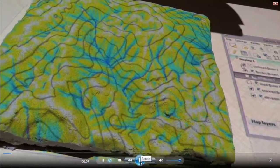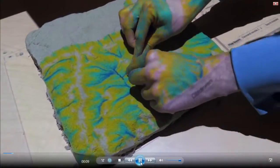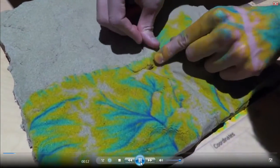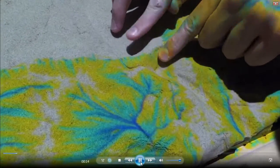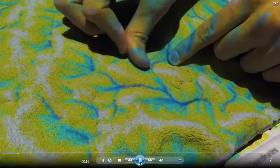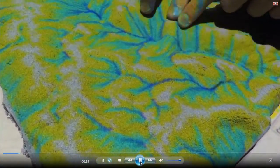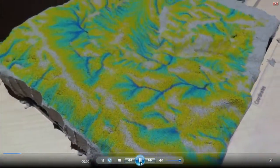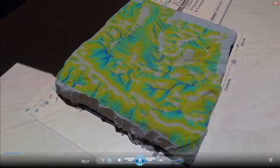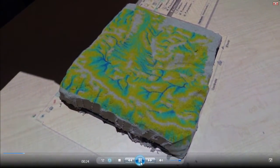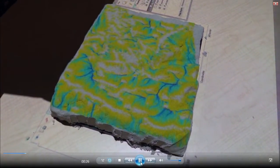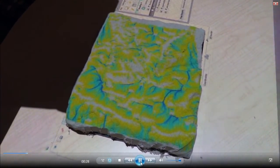Traditionally in design and landscape architecture especially, we use very intuitive methods like sketching, clay model making, contour models to explore our design ideas. However, in digital design, in GIS or CAD and 3D modeling, there's this disjunction between the physical and virtual where you're trying to interact with a computer.